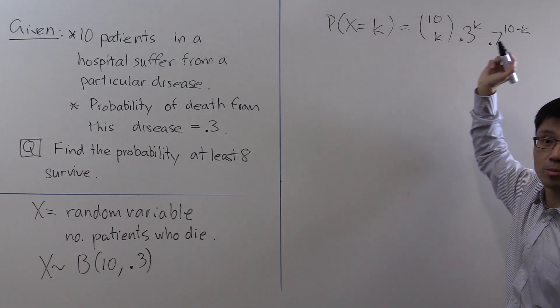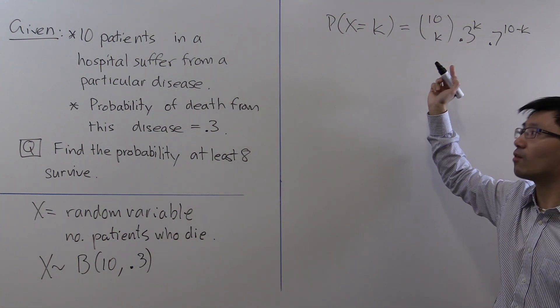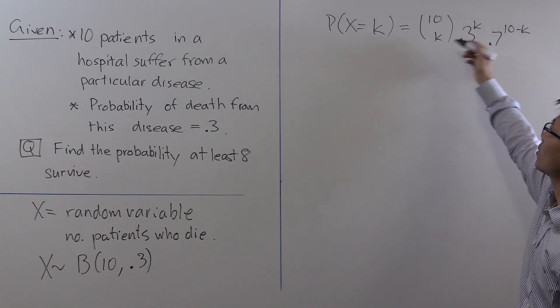This probability you have to multiply by the 10 choose k choices of which k of those 10 may actually die. So that's why you have the product here.